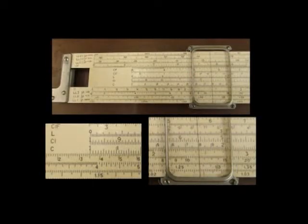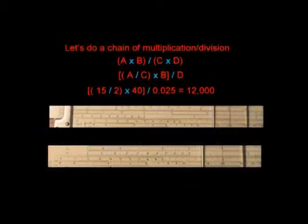Here's the C and D scale, and what we're doing here is we're multiplying 1.35 times 1.8, and we read the number here. So here's 1.35 and the 1.8, and the answer is 2.43. It's as simple as that, just reading scales.